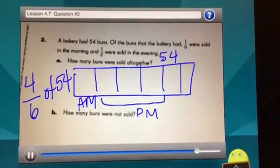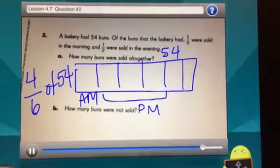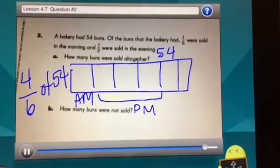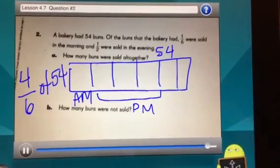Another way I can think about this is if I know the entire bar is worth 54 and there are six parts, can I find the value of one bar and then multiply it by the number of pieces I need?